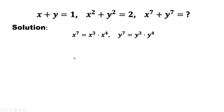There are different methods to solve this kind of question. Here is the idea we are going to use: from the given conditions, we are trying to lower down the power. We will derive x to the power of 3 plus y to the power of 3, and x to the power of 4 plus y to the power of 4.